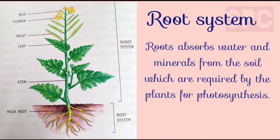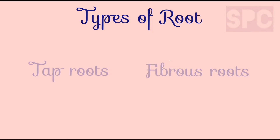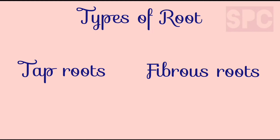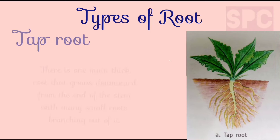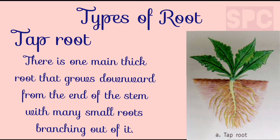The main function of roots is to absorb water and minerals from the soil which is required for the survival of the plant. Roots can be broadly classified into two main categories: tap roots and fibrous roots.